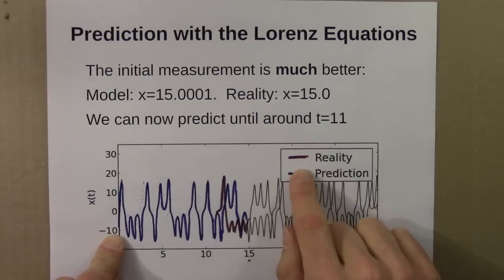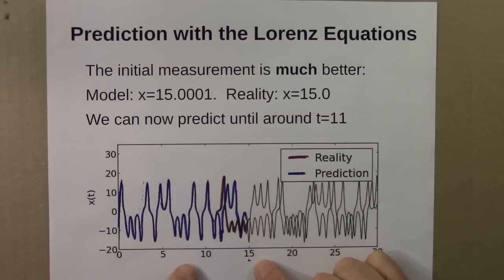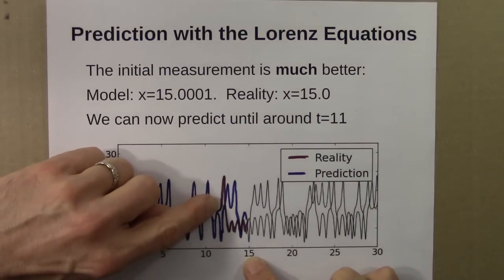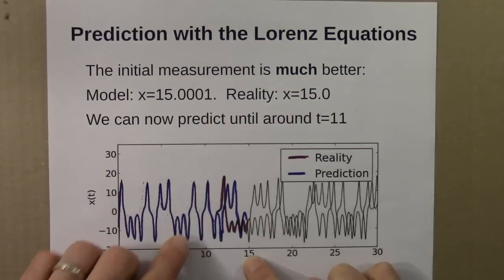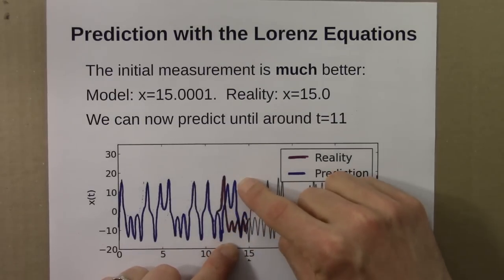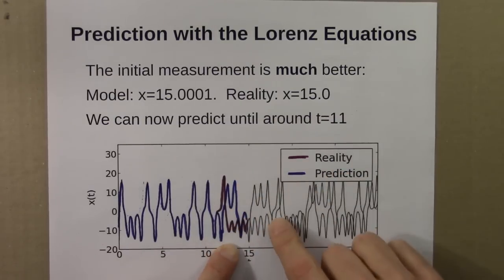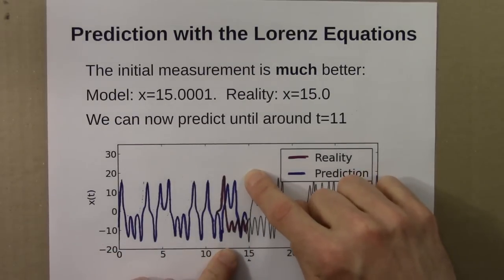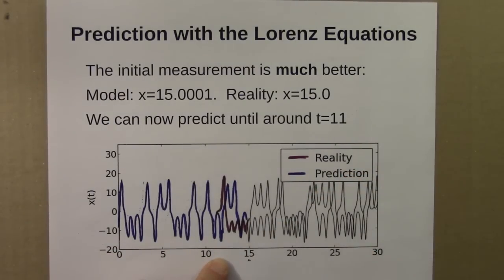Now the blue and the red curves are right on top of each other until around 11. Reality and prediction match each other indistinguishably for 11 time steps. Then again, reality takes a sharp turn away from the prediction, and for the rest of the run, we have very different behaviors of the two curves. Our prediction is good for a little while, and then becomes essentially worthless, rather suddenly at t equals 11. However, we were able to predict farther, so we improved our measurement.